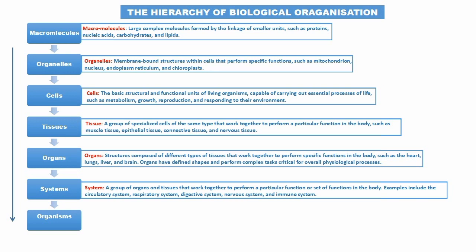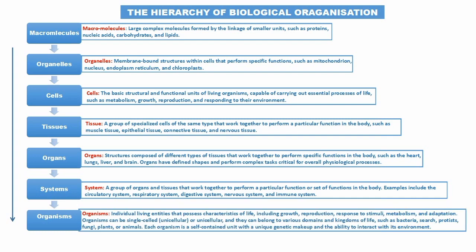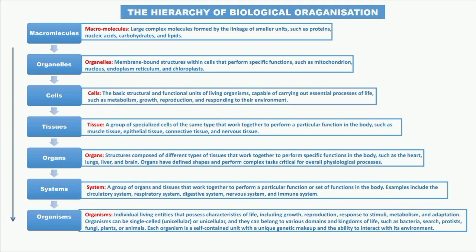Tissues are groups of specialized cells of the same type that work together to perform a particular function in the body. Tissue types include epithelial tissue, connective tissue, and nerve tissue. Organs are structural compounds of different types of tissues that work together to perform specific functions in the body, such as the heart, lungs, and brain.